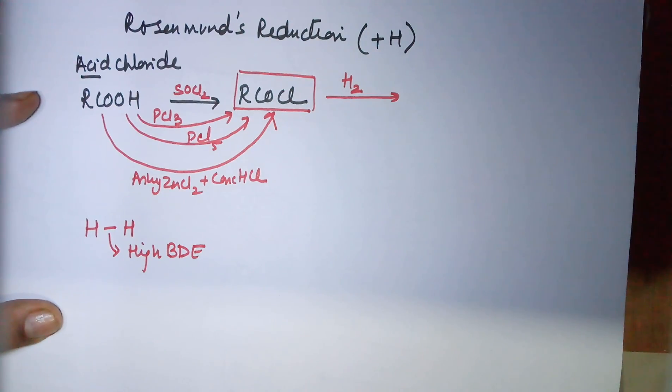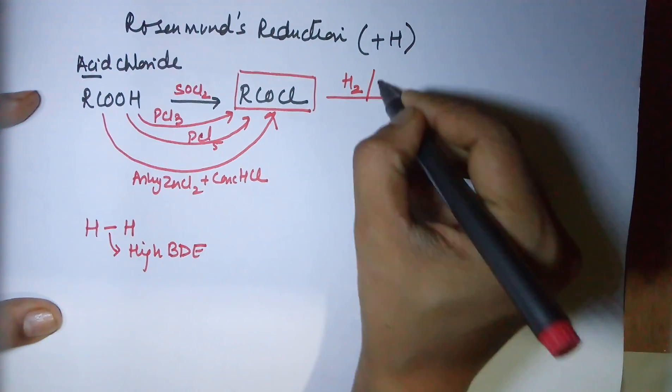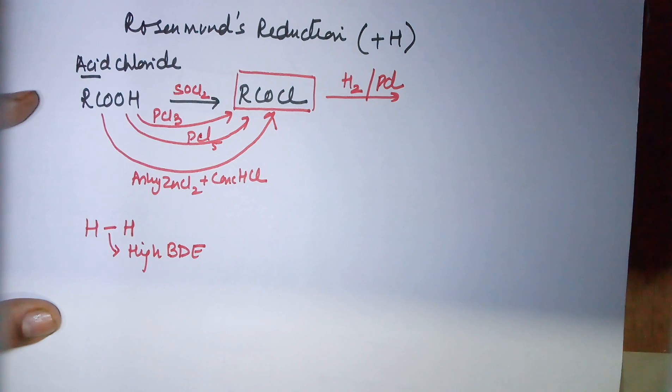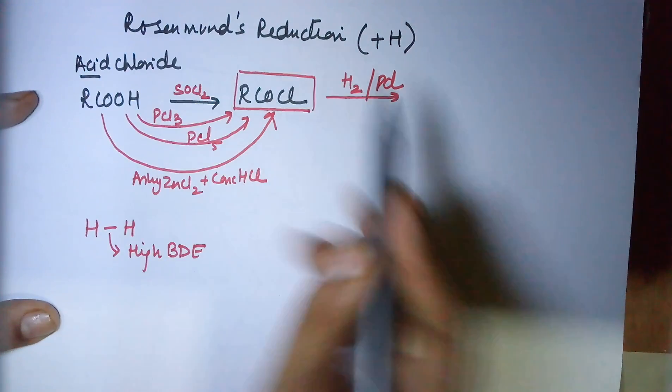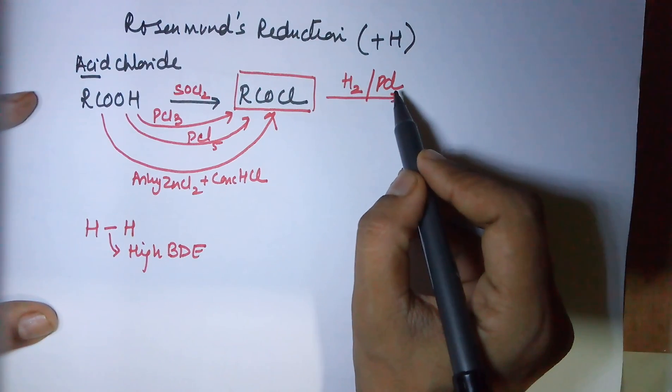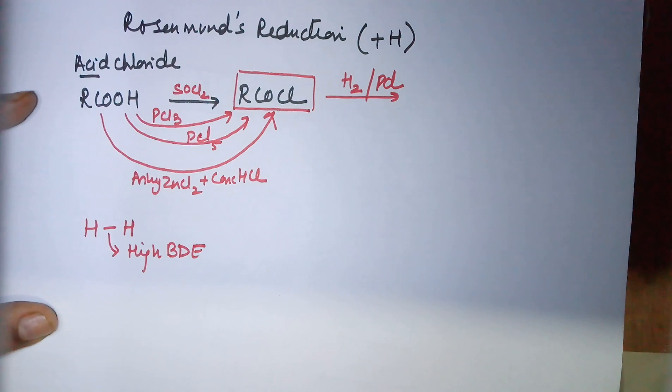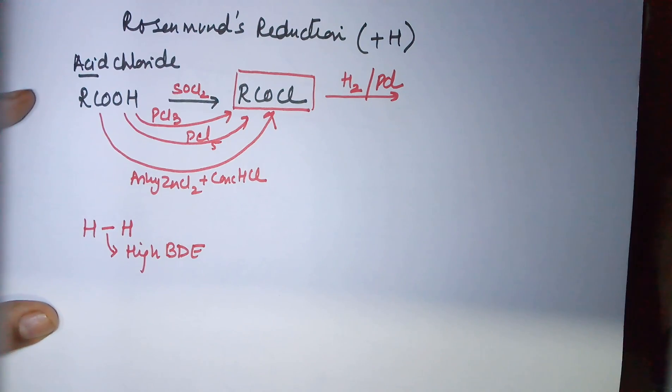So at room temperature this reaction would not take place. You require a catalyst for the reaction to proceed. Hence the catalyst uses palladium - you can use nickel and platinum too for reduction, but since it is a named reaction and the person who had done this reaction had used palladium, you have no choice but to write palladium here.